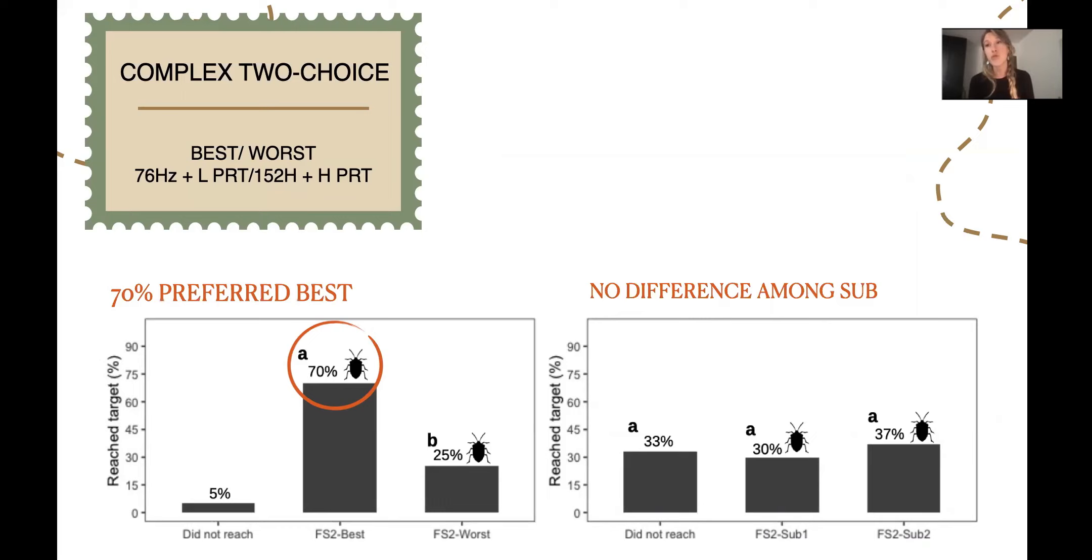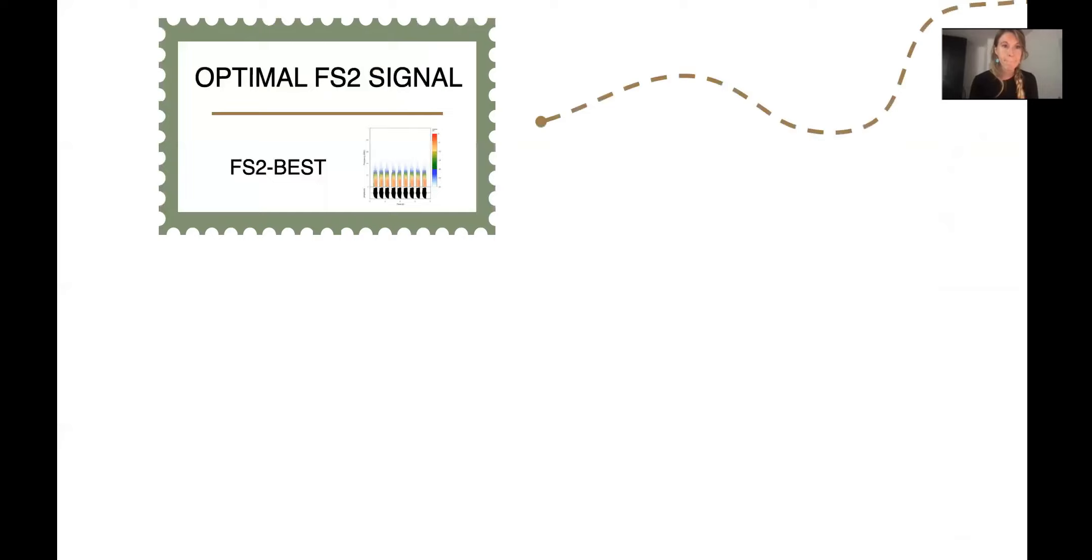What we actually found was that when comparing the best and the worst, 70% of the males preferred the best. But when exposing them to sub one and sub two, we did not find a difference, even with the insects that did not find any of the targets. The animals when exposed to these mixed signals were not able to take a choice or have a clear preference. These results can possibly indicate that there is not a hierarchy of parameters and would suggest that frequency and pulse repetition time equally affect the FS2 attractiveness for the males.